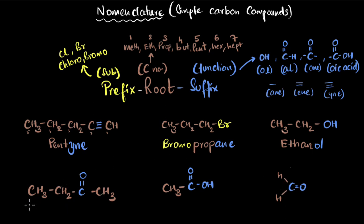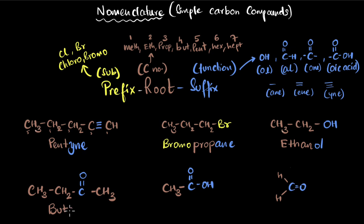For this next one, again no substituent groups — no chlorine or bromine — so no prefix. I count the carbon atoms: one, two, three, four — four carbons gives 'but.' I have a C double bond O. It's not an aldehyde (which needs a hydrogen) and not a carboxylic acid (which needs OH) — it's a ketone, so the suffix is 'one.' I write 'butane,' delete the 'e,' and add 'one' to get butanone.